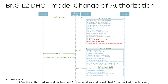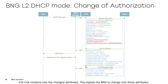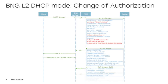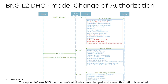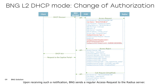After the authorized subscriber has paid for the services and is switched from blocked to unblocked, in order not to break the current session, a change of authorization can be sent from the RADIUS server. Full COA contains only the changed attributes, signaling the BNG to change only those attributes. To simplify integration, we suggest using simplified change of authorization, which informs BNG that the user's attributes have changed and a reauthorization is required. Upon receiving such a notification, BNG sends a regular access request to the RADIUS server.